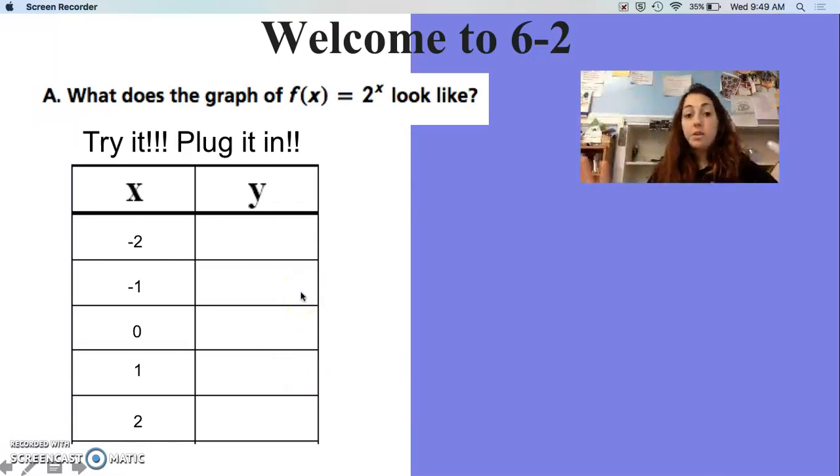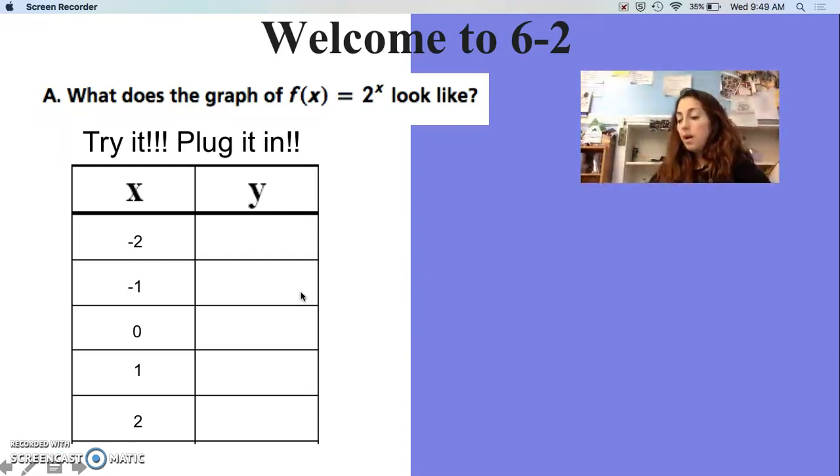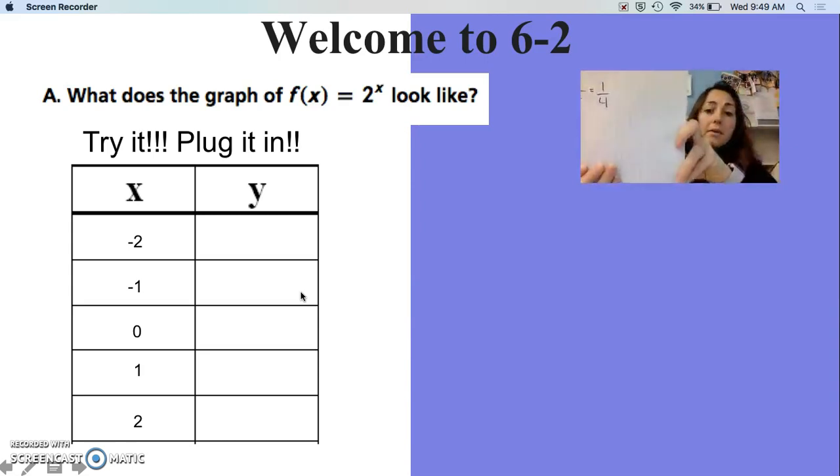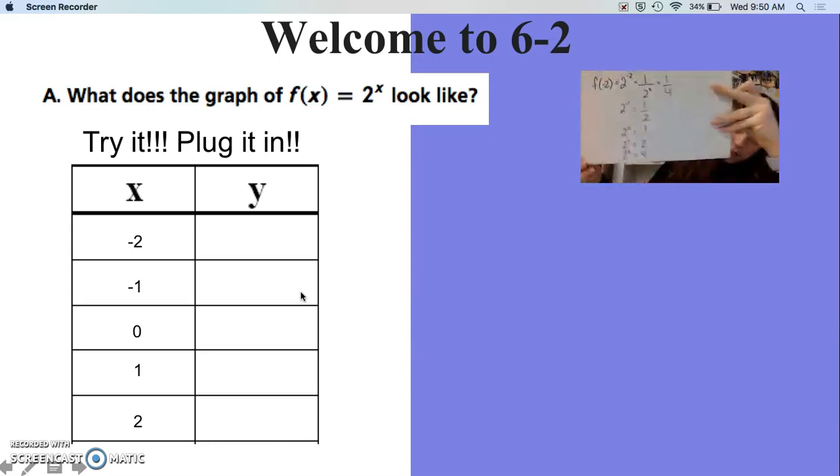Now I've got negative 2 for my x value, you get 1/2. When x is 0, 2 to the 0, we've got to remember that rule - that is 1. When x is 1, 2 to the first power is 2. When x is 2, 2 to the second power is 4. So these are the 5 input and output values that you should have gotten.